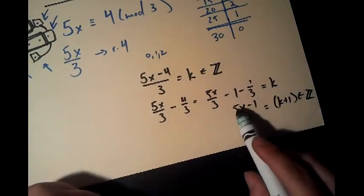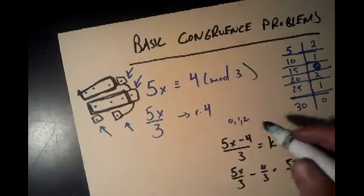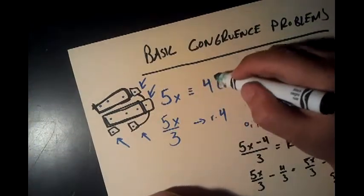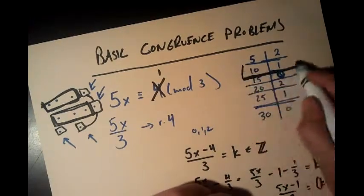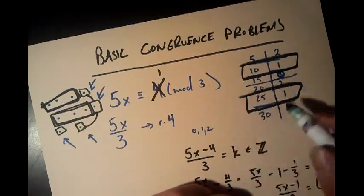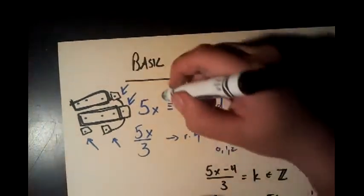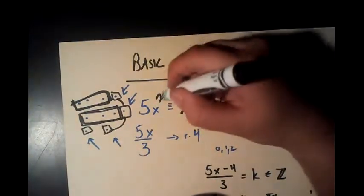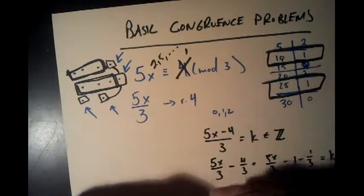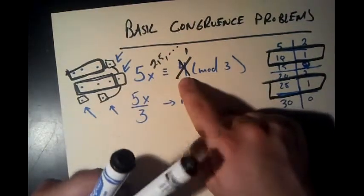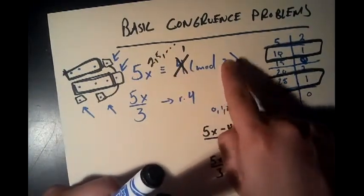So I've reduced this into a remainder 1 problem. So really, this is not 4 at all. This can just be a 1. And if that's a 1, then any of these cases could be 10, could be 25, which means that x could be 2, could be 5, and so on. So that's how you solve those kind of problems where the remainder is bigger than our c value.